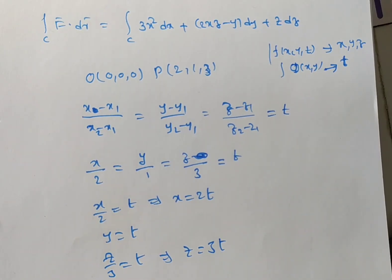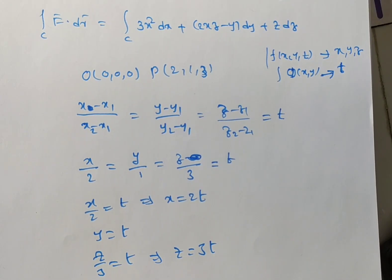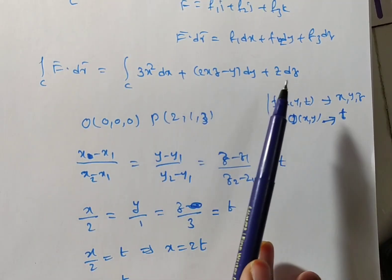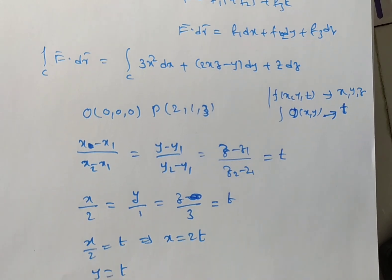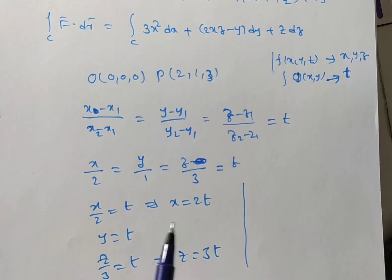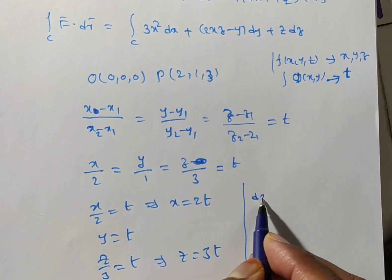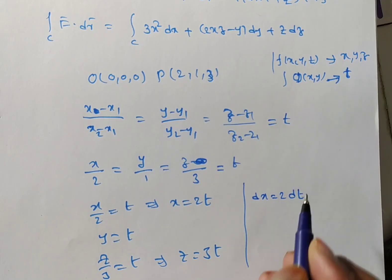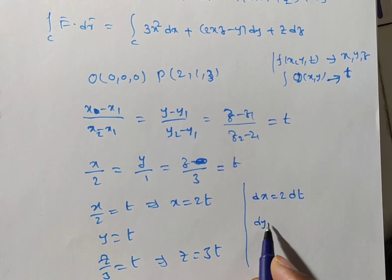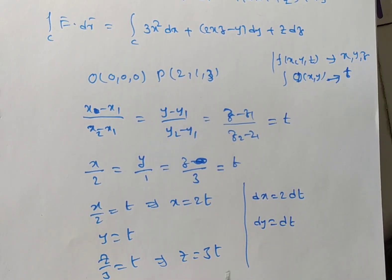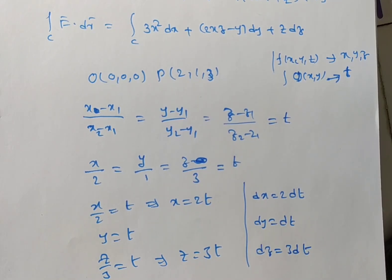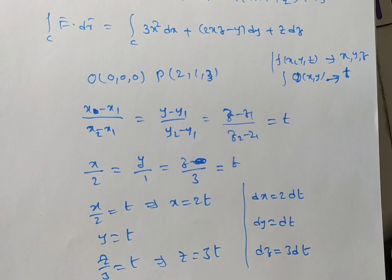Similarly, what we have to change in the integrand? dx, dy, dz, also the limits. Now, you change the dx, dy, dz, nothing but just you differentiate this one. Then dx equals 2dt. Next, dy equals dt. And what about the last term? dz equals 3dt. So, I got dx, dy, dz also in terms of t.